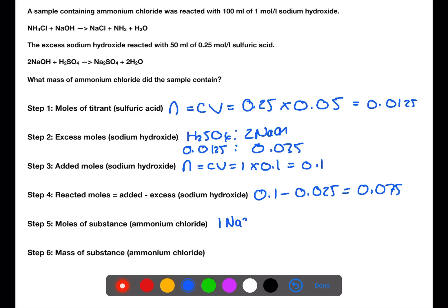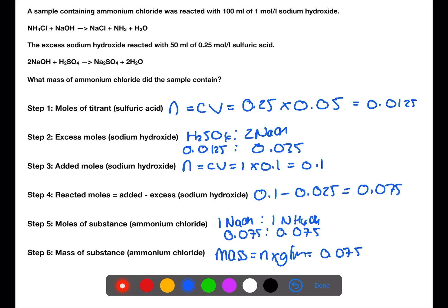One mole of sodium hydroxide reacts with one mole of ammonium chloride. This means that there were 0.075 moles of ammonium chloride present in the substance. To find the mass of ammonium chloride, we take the number of moles and multiply by the gram formula mass, giving a mass of ammonium chloride of 4.01 grams.